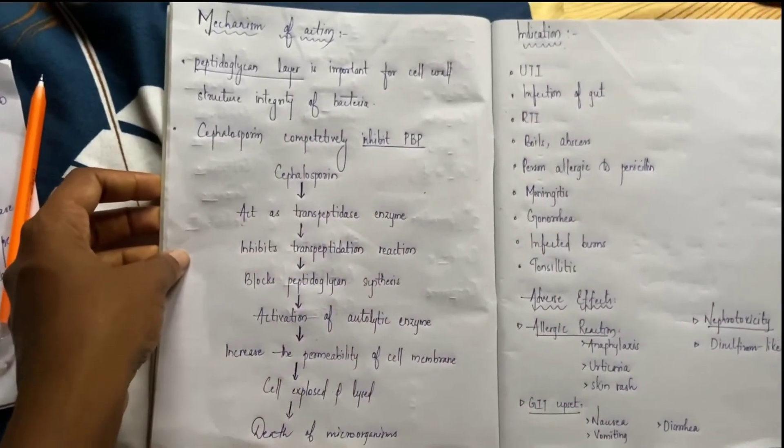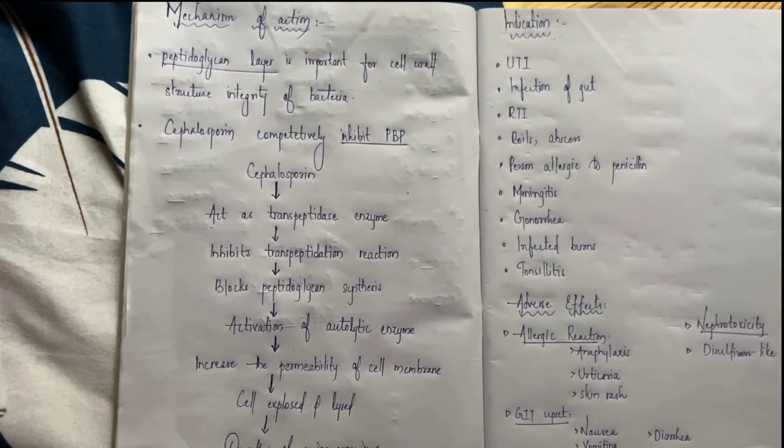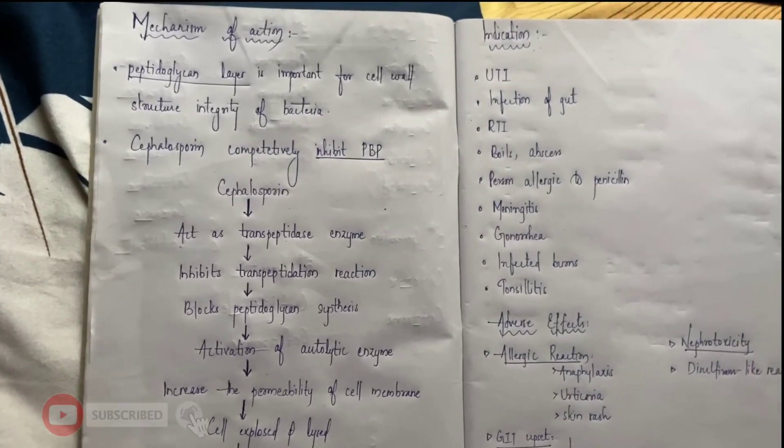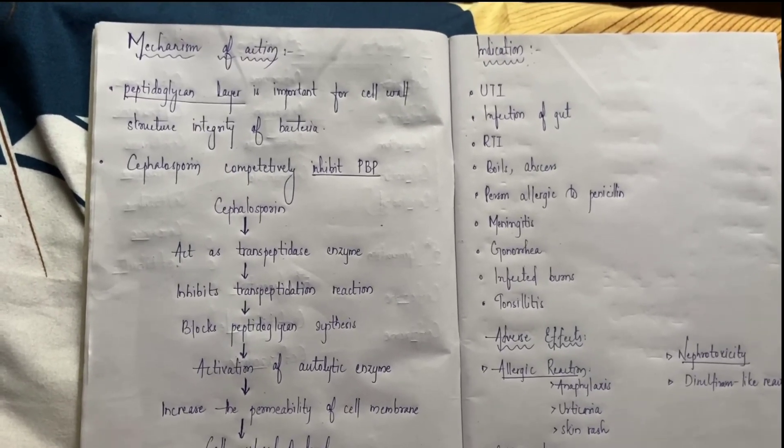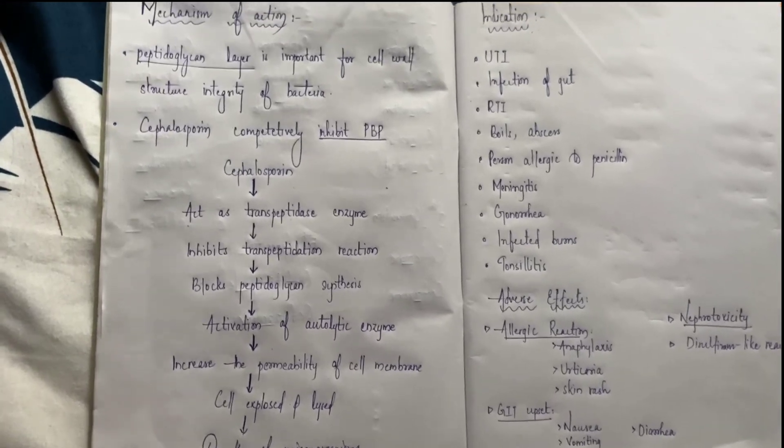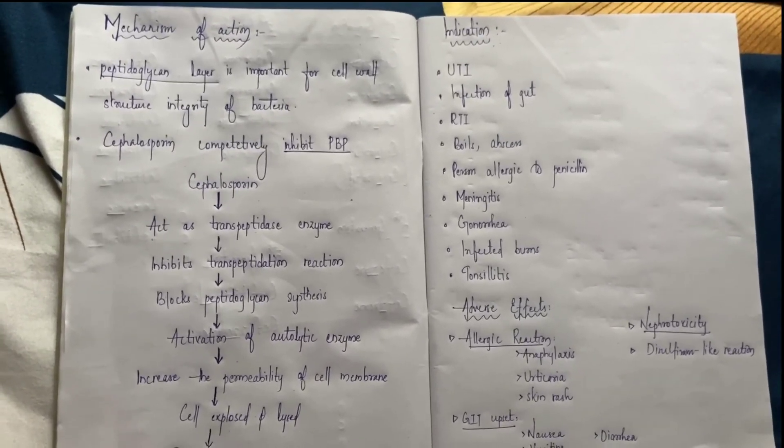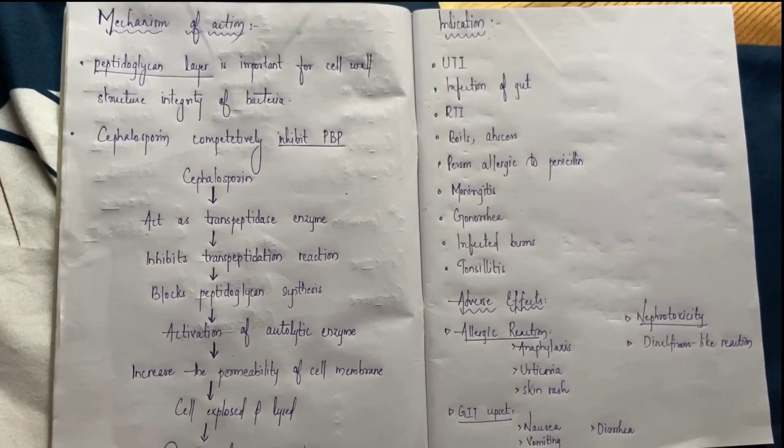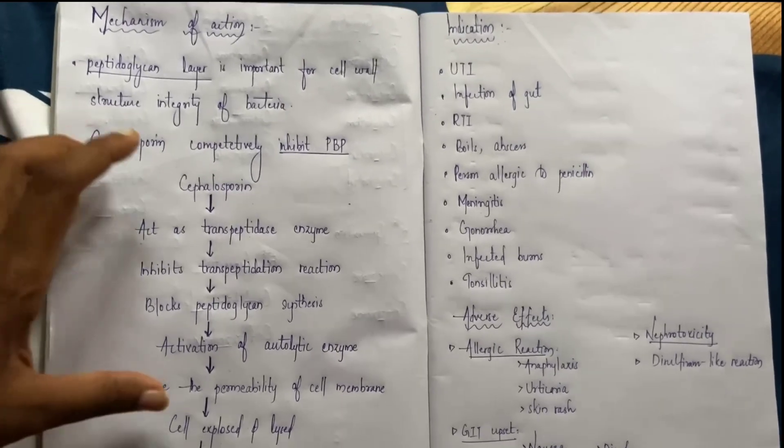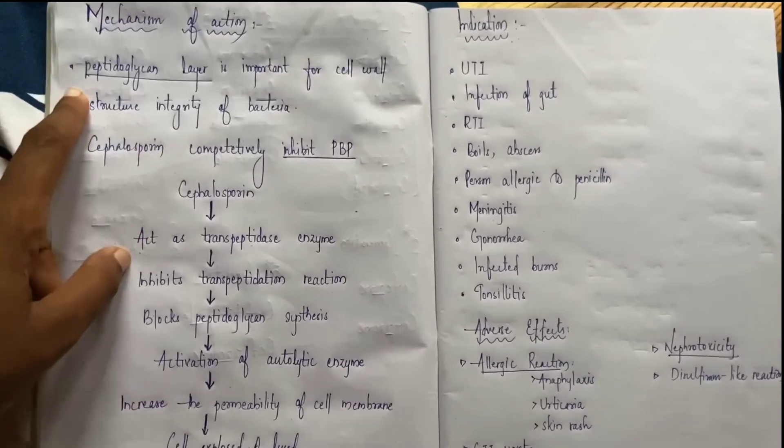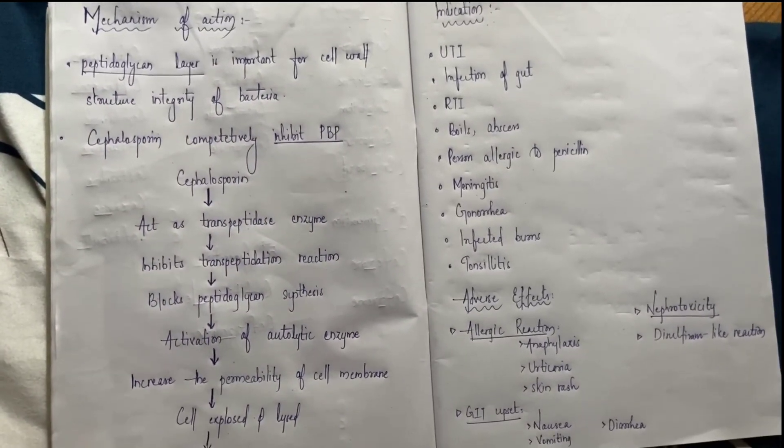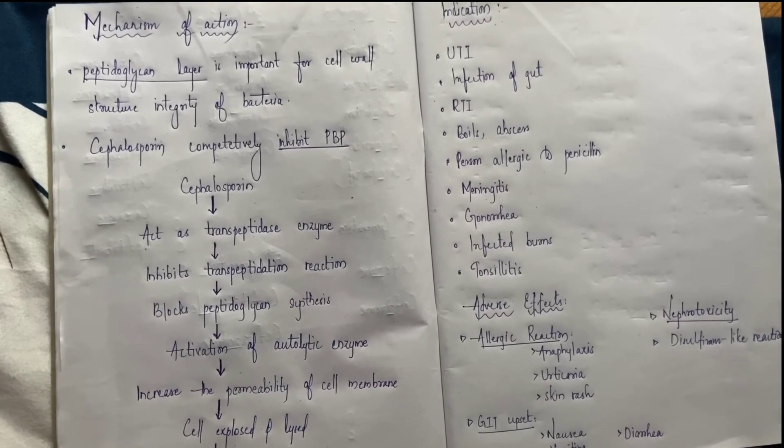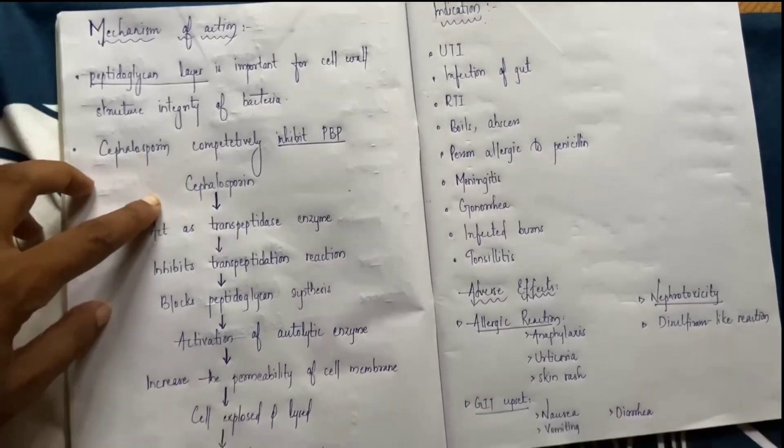Mechanism of action is again the same, because whether it's penicillin, cephalosporin, or monobactams, all of them are under beta-lactam antibiotics. As we discussed in the last class with the diagram, the mechanism is the same. It involves the peptidoglycan layer, which is formed by PBP, that is penicillin binding protein, also called transpeptidase.